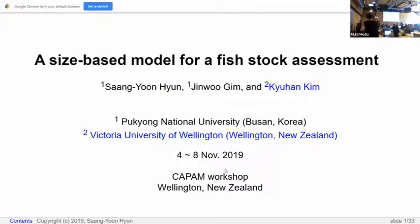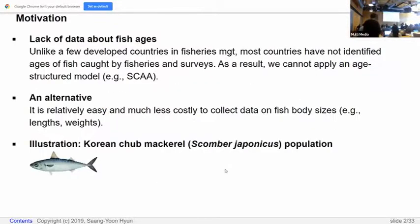Hello. I'm Sang-Yoon. I work at a Korean National University located in Busan and I have co-authors Jinwoo Kim and Kyuan Kim. Fortunately Kyuan is here. He's a PhD student in mathematics and statistics at Victoria University of Wellington. We switched here, slightly changed our original title to size-based model for fish stock assessment, removing Bayesian surplus production model.